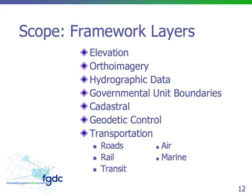Here's a list of the framework layers in use in the U.S. You have elevation, ortho imagery — which is scanned and registered air photos or images — hydrographic data which is water, surface water such as lakes, rivers, and streams. There are five sub-themes: governmental unit boundaries, administrative boundaries, the cadastral or parcels layer, geodetic control for control points, and five sub-themes of transportation specific to different modes of transportation.